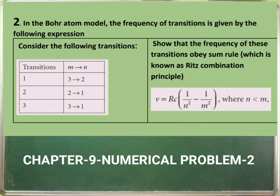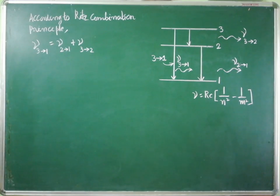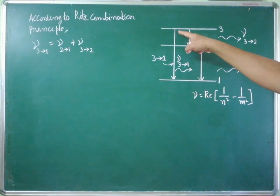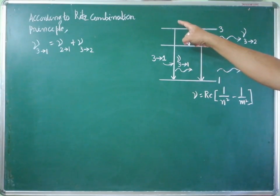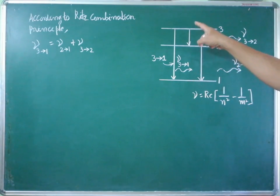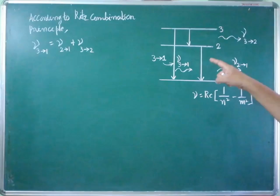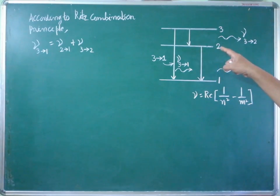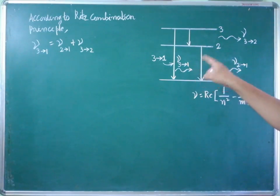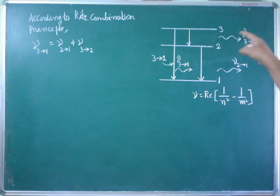We are going to solve the second problem in chapter 9. Look at the diagram. In this energy level diagram, three transitions are given. The first transition is the electron jumping from the third orbit to the first orbit. In the next one, the electron jumps from the third orbit to the second orbit. In the third one, the electron jumps from the second orbit to the first orbit. In each transition, the energy is emitted in the form of a photon.